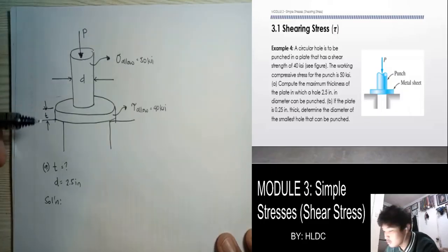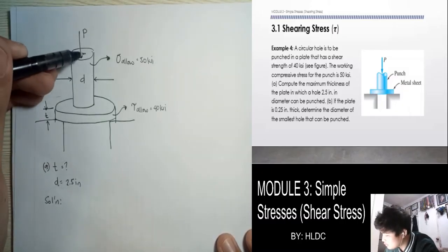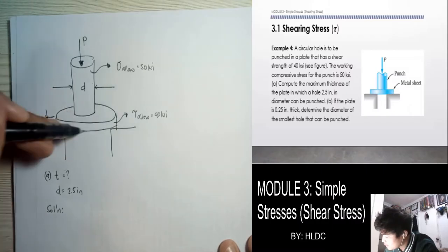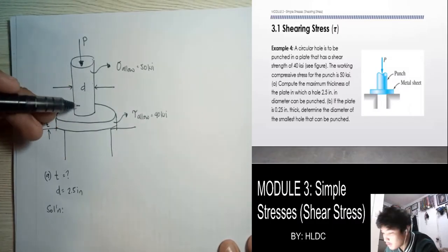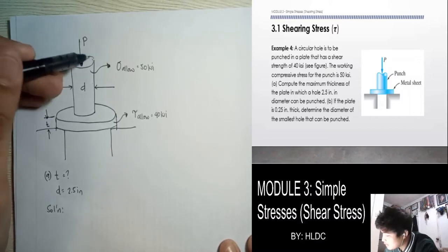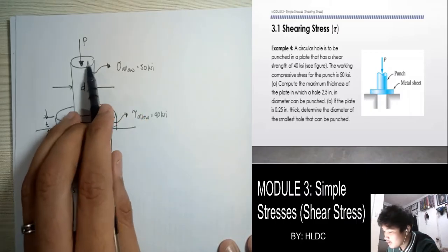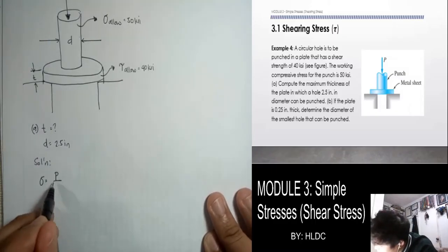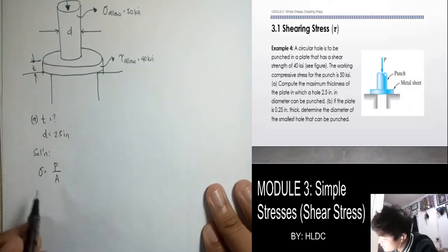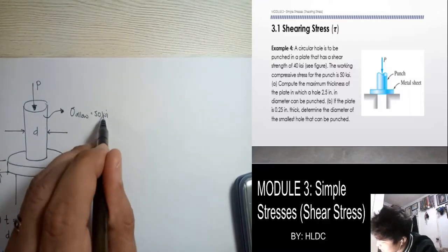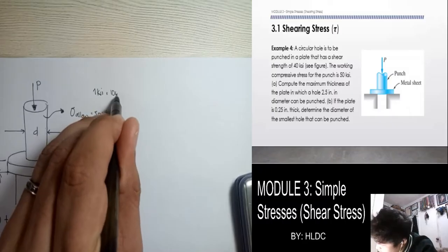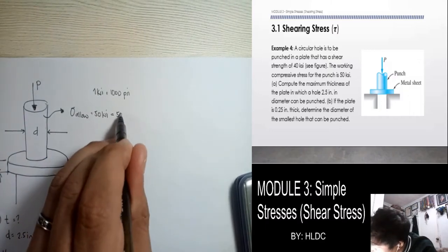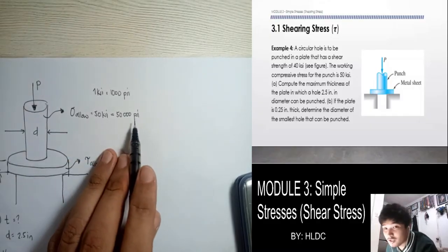To get the maximum P that can be applied without destroying the punch, we use the basic normal stress formula: normal stress equals force over area. We have the allowable stress of 50 KSI. Since 1 KSI equals 1,000 PSI, we can write this as 50,000 PSI equals force over the cross-sectional area, which is pi over 4 times the diameter squared — that is (pi/4)(2.5)². The unit of force must be in pounds since we have pounds per square inch.